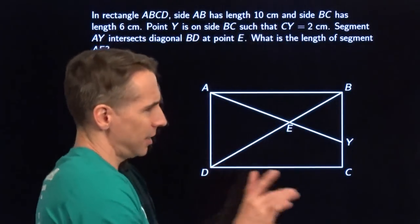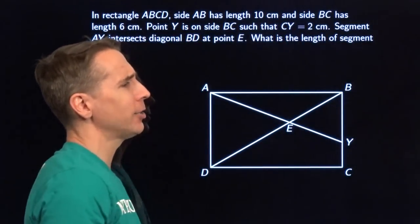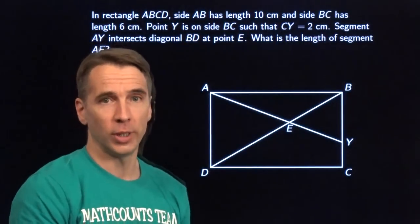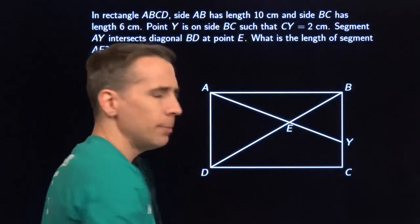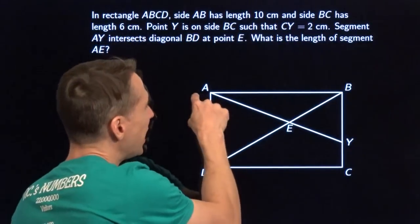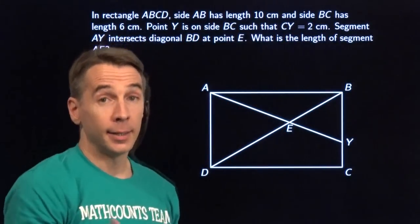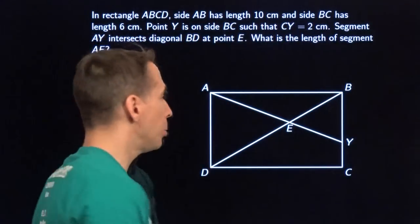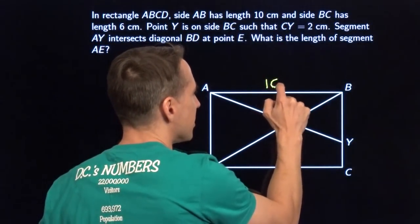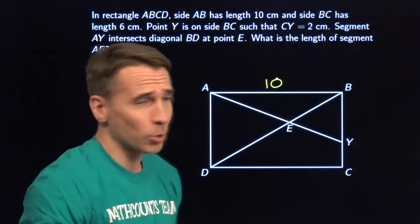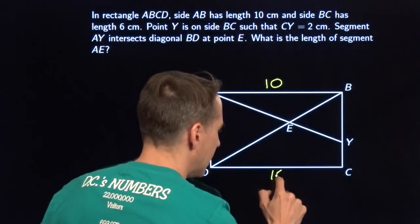Alright, Harvey, I got this. You just watch, I'll be able to handle this. You just stand over there and look pretty. Here we go. We have a rectangle A, B, C, D. We're told that AB is 10.